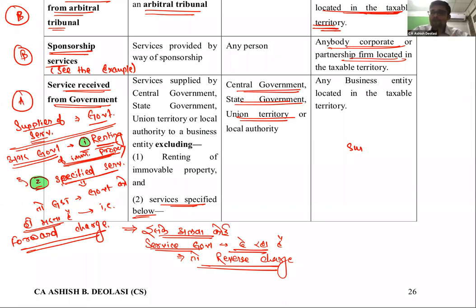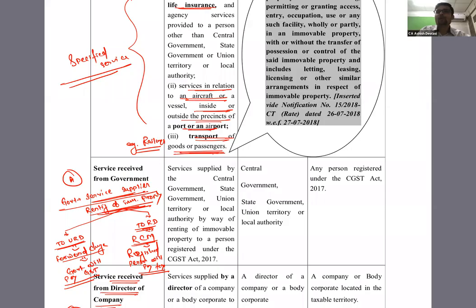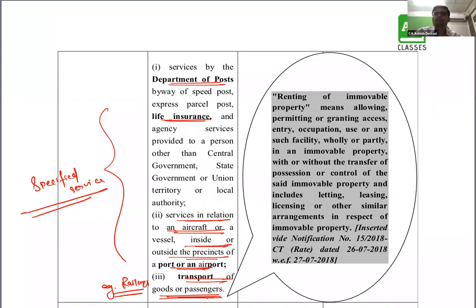Speed post example: जब आप speed post करते हो, उस receipt पर GST लगा होता है, लेकिन आपको खुद GST नहीं भरना — government forward charge में भरती है। इसी तरह railways में AC या first class का ticket लेने पर GST railway यानी central government forward charge में भरती है। इन specified services और renting of immovable property पर government को forward charge में GST भरना पड़ेगा।